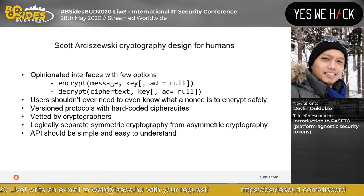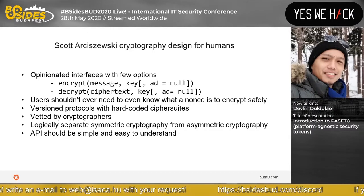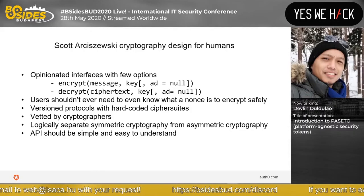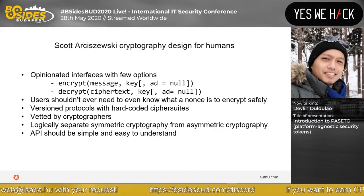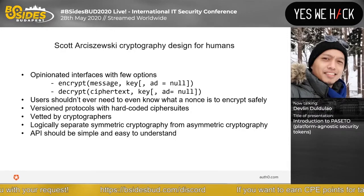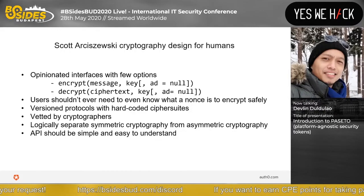He has a list of cryptography designed for humans: opinionated interfaces with few options. You should have an opinionated interface — encrypt and decrypt. The encrypt call should be your API for any encryption library. Users shouldn't ever need to know what a nonce is to encrypt safely. Version protocols with hard-coded ciphersuites, vetted by cryptographers. Logically separate symmetric cryptography from asymmetric cryptography. The API should be simple and easy to understand. There's a lot more — I highly recommend you watch his presentation video online.